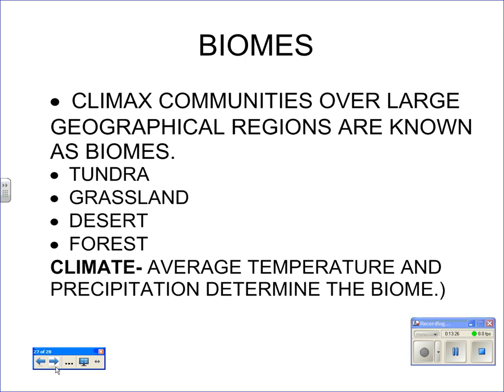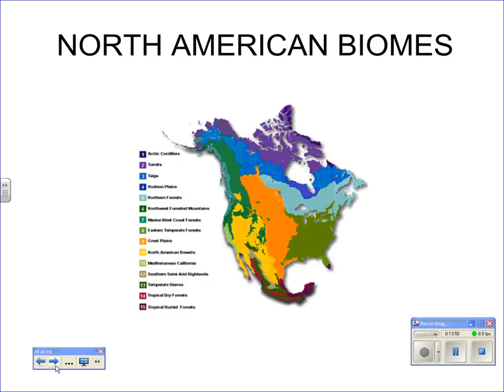Climax communities in large areas are called biomes. Common biomes include tundra, grassland, desert, and forest, each with characteristic plants and animals determined by climate — temperature and rainfall. A map of North American biomes shows that Florida has its own unique ecosystem compared to the eastern United States. That concludes the ecological review. Thank you and good luck on your test.